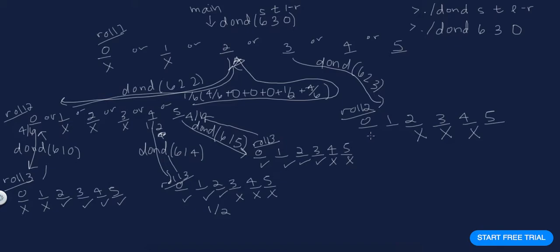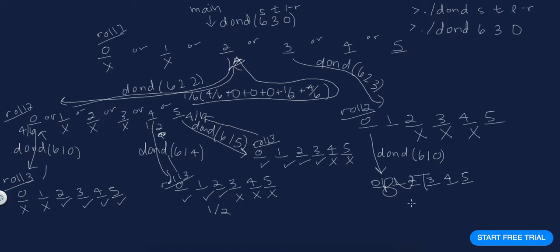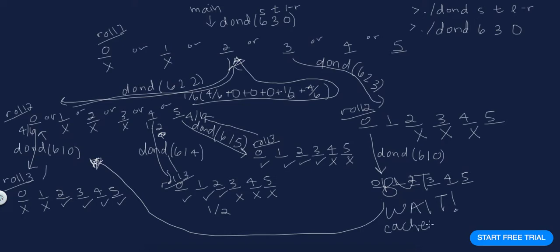What if I roll a zero on my second roll? I have one roll left, so I call DOND(6, 1, last roll = 0). I could calculate this — but wait, I've done this before over here. So I don't want to calculate it again. I want to grab it from my cache and immediately return four out of six.